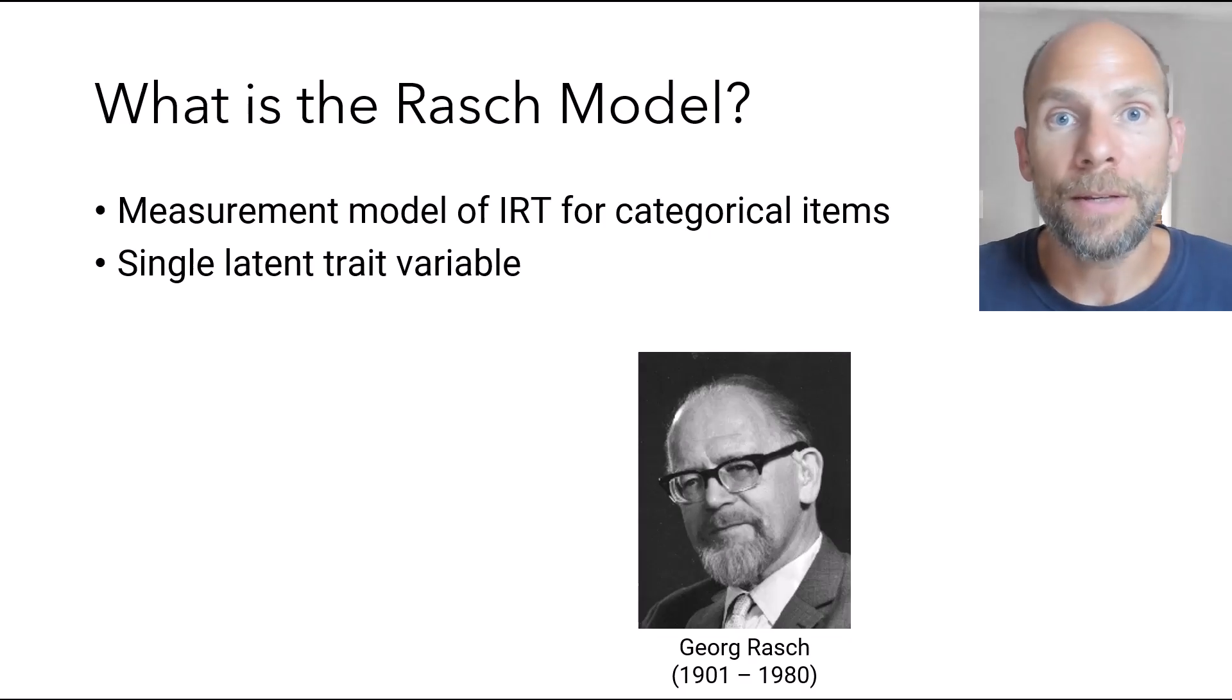What are the specifics of the Rasch Model? The Rasch Model assumes that there is a single underlying latent trait variable. For example, an ability variable reflecting intelligence or a personality variable reflecting extraversion and that that single latent continuous variable accounts for the associations between the items.